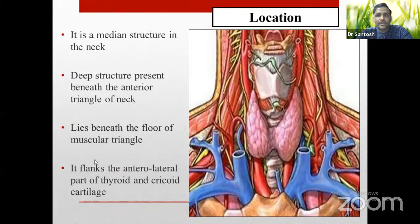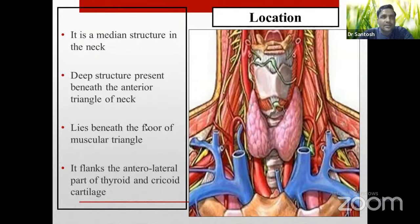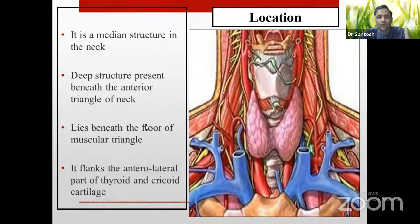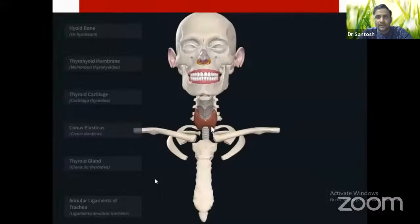Regarding location: the thyroid gland is a median structure in the neck and represents a deep structure of the anterior triangle of the neck. It lies anteriorly beneath the muscular triangle, which is one of the subdivisions of the anterior triangle. The anterior triangle contains three pairs of triangles — digastric, carotid, and muscular — plus a median submental triangle. The thyroid gland lies beneath the floor of the muscular triangle and flanks the anterolateral parts of the thyroid and cricoid cartilages, extending from C5 to T1 vertebra.